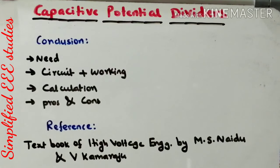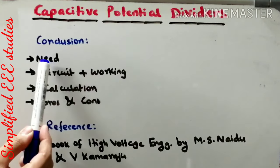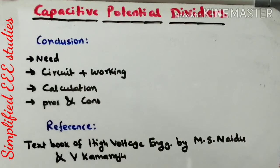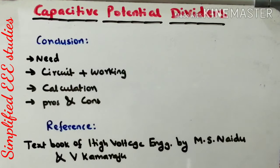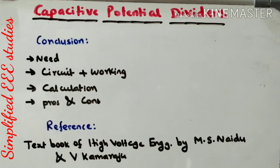Finally, let me conclude the session. At the beginning, I explained why Capacitive Potential Divider is required — it is typically for measurement of impulse voltage. I explained the circuit diagram with working and how to calculate the voltage V2, meaning how much voltage is applied, using one equation. Eventually, I discussed the pros and cons of Capacity Potential Divider. Thank you for watching this video. If you found this channel interesting, please don't forget to subscribe. Thank you very much.